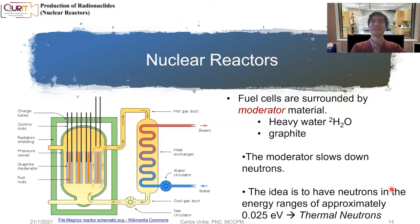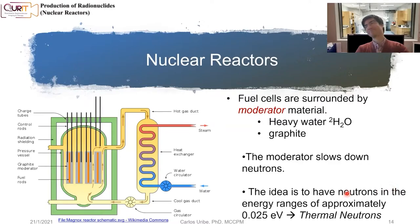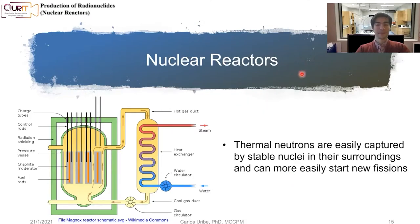We call them thermal neutrons because, from thermodynamics, the energy of particles in a gas is related to the Boltzmann constant and temperature. If you multiply the Boltzmann constant by average room temperature, you get energies around these values — that's what we call thermal neutrons. Thermal neutrons are easily captured by the stable nuclei in their surroundings, so they can more easily start new fissions.